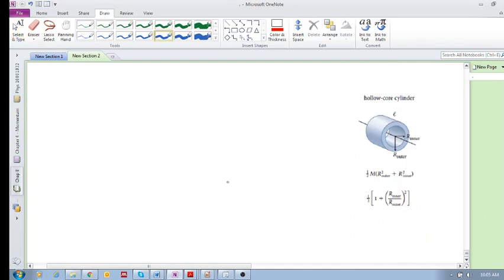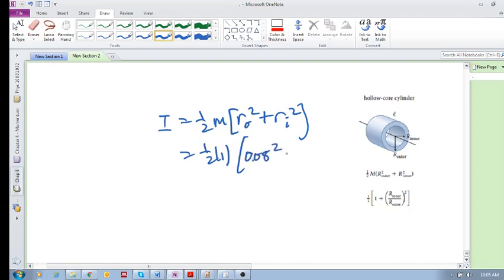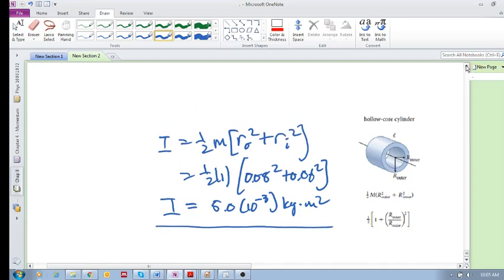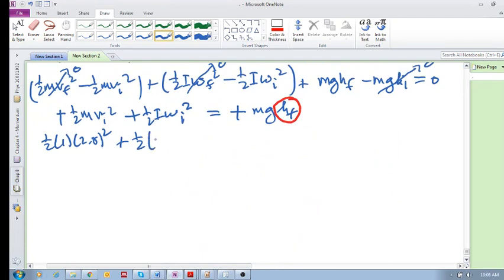How do we calculate the rotational inertia of a ring? It's equal to half m r outer squared plus r inner squared. That's your r outer radius, that's your inner radius. So we've got half times one kilogram times 0.08 squared plus 0.06 squared, and I calculated 5 times 10 to the minus 3 kilogram meter squared. So that is your rotational inertia for this guy.